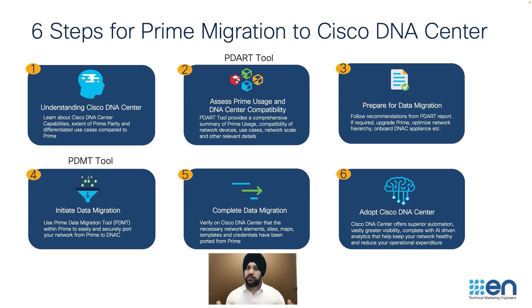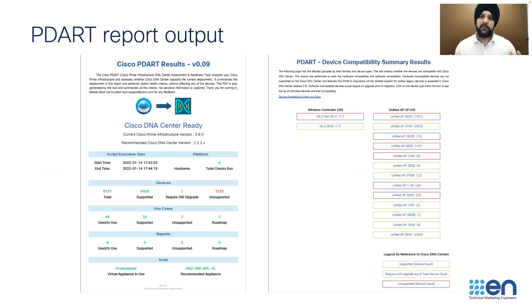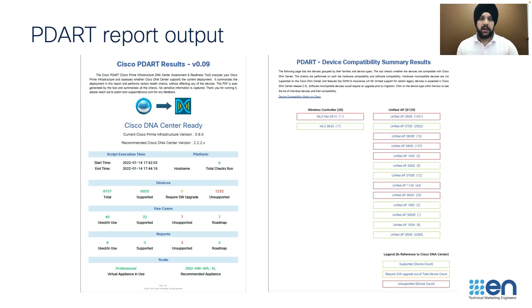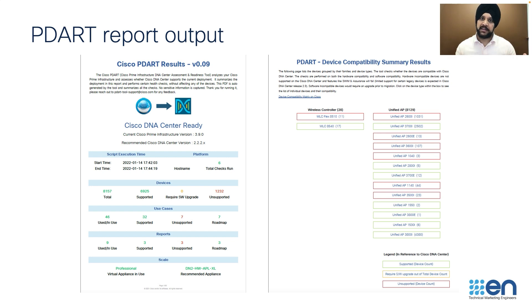The first thing we're going to do is run the PDART tool in your network, which is going to generate a PDF report highlighting exactly how many devices are going to be supported and unsupported in Cisco DNA Center. This will give you a view of whether you would want to coexist between Cisco Prime and Cisco DNA Center until you refresh all of your end-of-life, end-of-support devices, and then migrate completely to Cisco DNA Center.